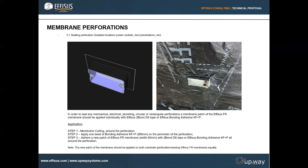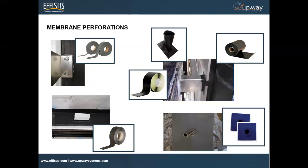If you don't give them all the details, instructions and information, you might compromise the quality of your facade and vapor membrane application. Our simple step-by-step guide covers how to cut the membrane around the perforation, what kind of product to apply on the perimeter of the perforation, how to place the patch, and what product to use to bond the patch. We explain everything and go into detail for all the membrane perforations you might have on your project.